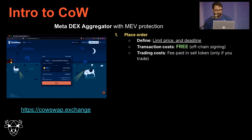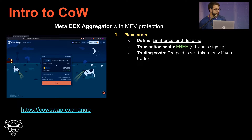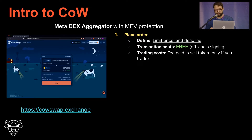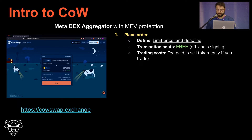Let's dig a little bit deeper by seeing a simple workflow. A user places an order. What is an order in COW protocol? An order is a limit order — you define a limit price that will be executed at that price or better, and then you have a deadline, so it will execute before that deadline or not at all. One important difference from other DEXs is that there's no transaction cost for submitting an order. This is because it uses meta transactions — you sign it off-chain and then submit it to an off-chain API.